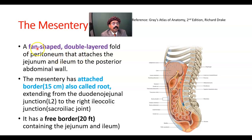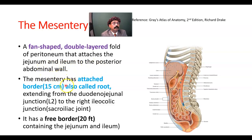The mesentery of the jejunum and ileum is a fan-shaped, double-layered fold of peritoneum that attaches the jejunum and ileum to the posterior abdominal wall. The mesentery has an attached border, also called the root of the mesentery.